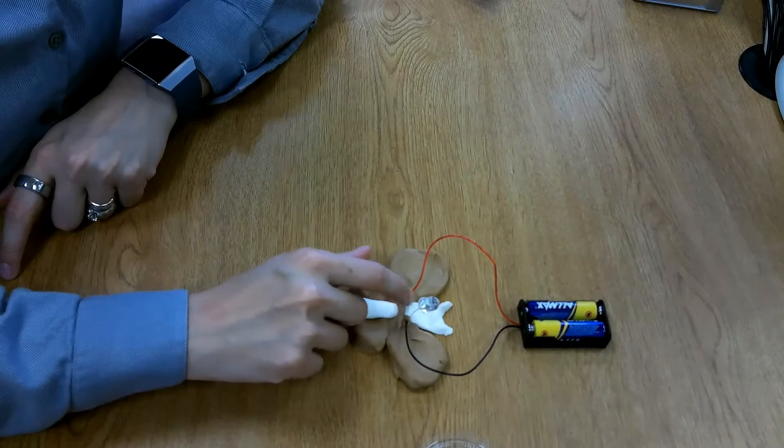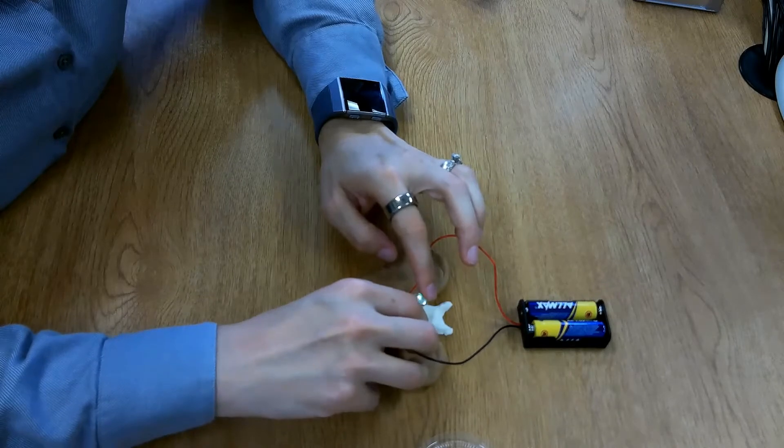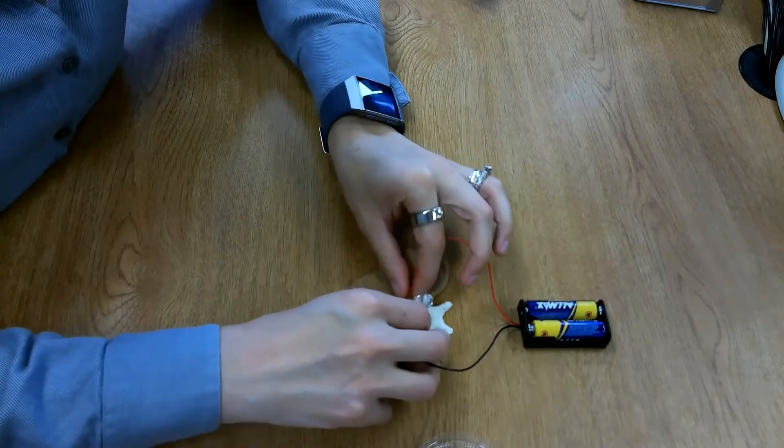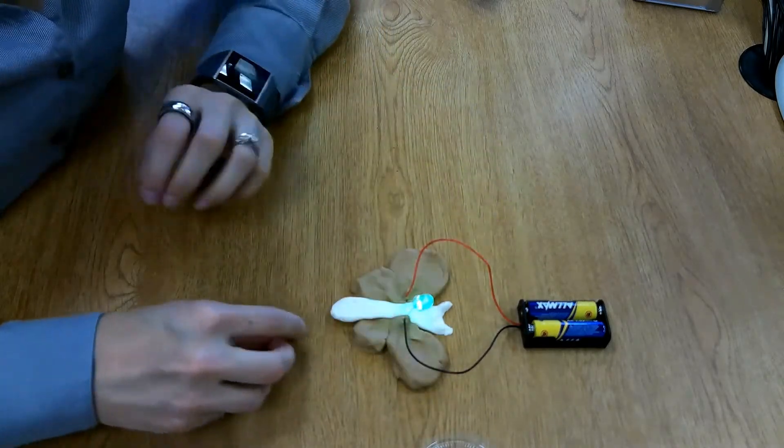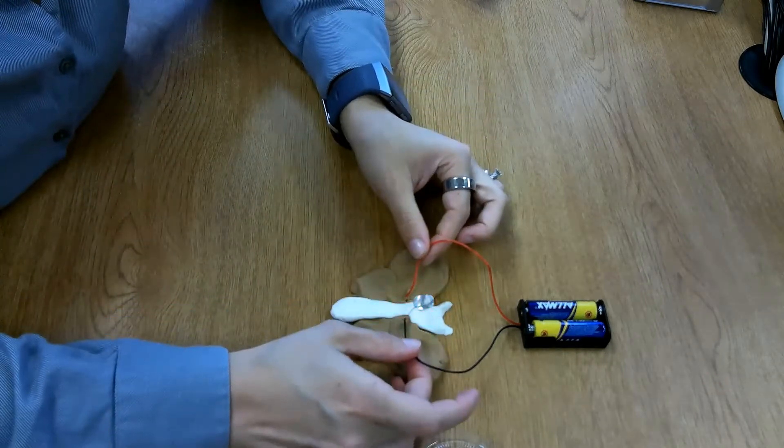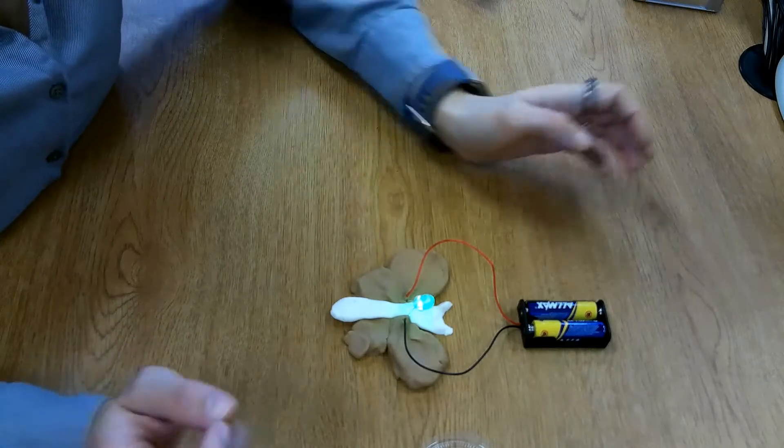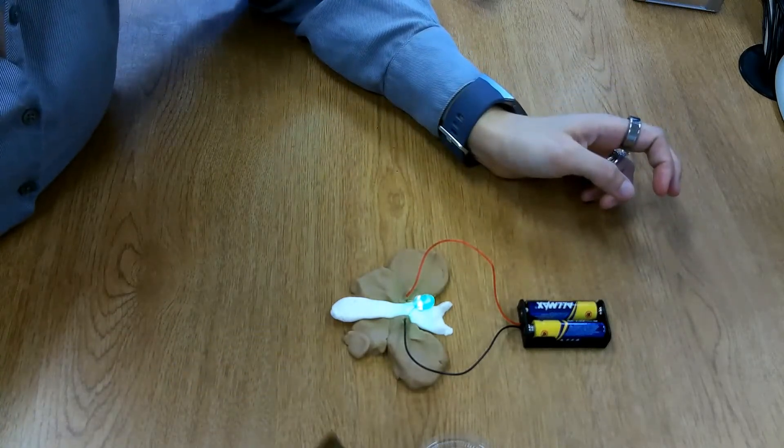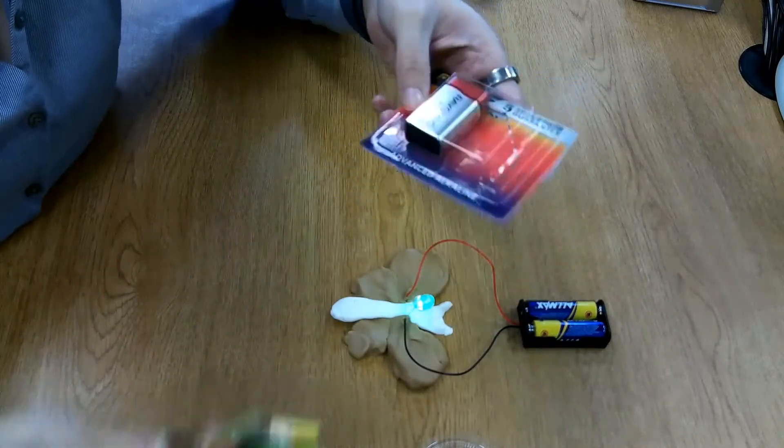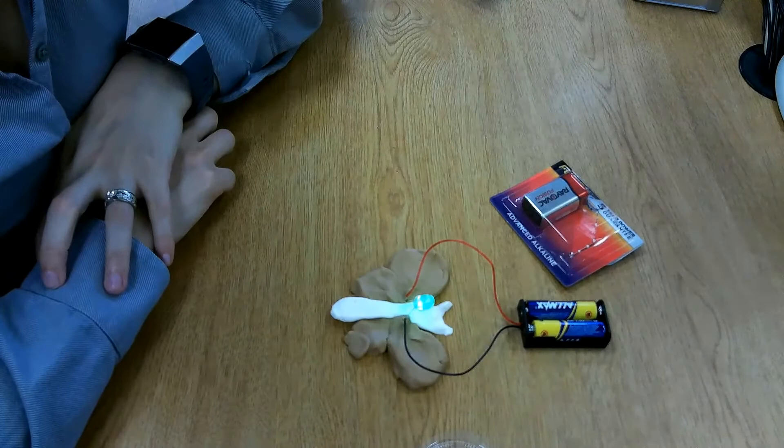When we take that away and the electricity is running through the LED to take the shortest path, our LED shines nice and bright. So that is squishy circuits. Let me show you the alternative way if you have a nine volt battery and alligator clips, and you'll see this concept in action even more.